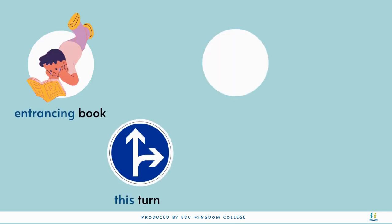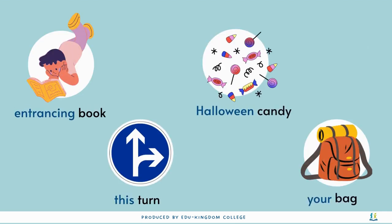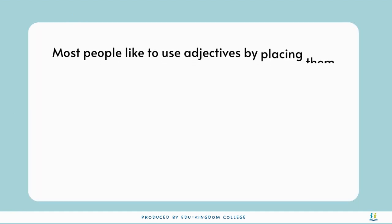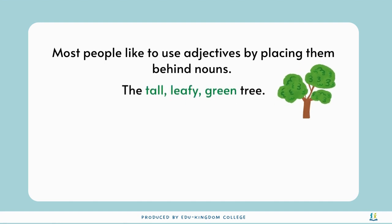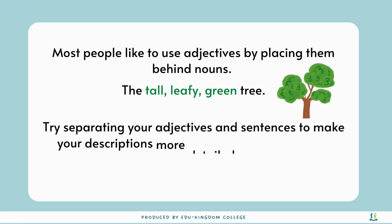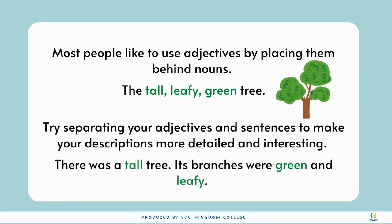You may have noticed that you are already using different types of adjectives in your writing. It's always a good idea to try a mix of different adjectives to make your writing more impactful. Most students like to list adjectives all in one place behind the noun, but this isn't always the best way to describe a setting or character. By experimenting with where you place your adjectives and adding an extra sentence to highlight features of an object, your description can be made more meaningful and effective.